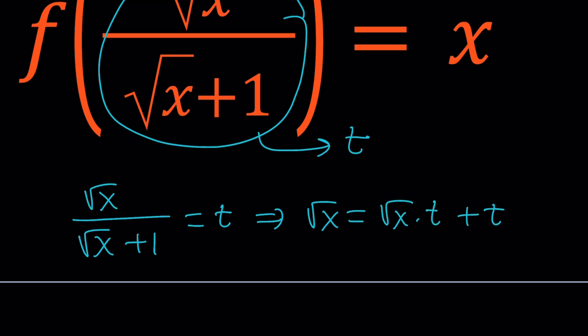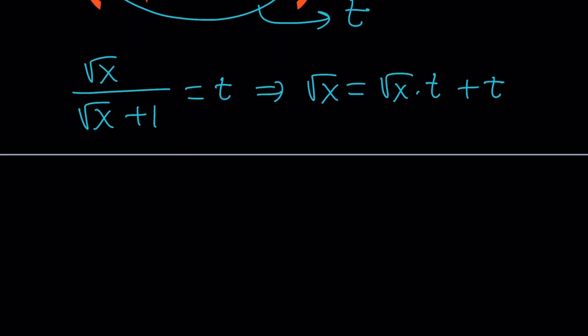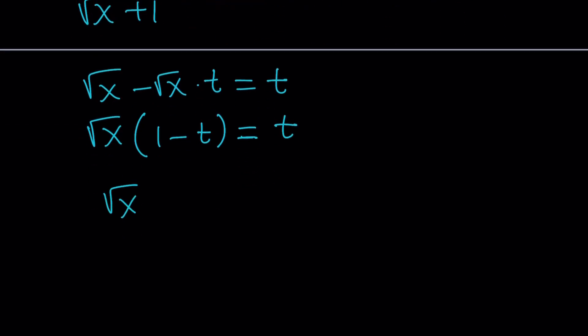So our goal here is to solve for x. Let's solve for square root of x first. We get square root of x minus square root of x times t equals t by subtraction. Take out the square root of x. You get 1 minus t equals t and then finally divide both sides by 1 minus t and that gives us square root of x.